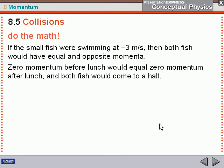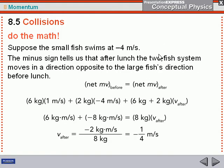If the small fish was moving at negative three meters per second, both fish would have the same momentum magnitude — negative three meters per second times two kilograms equals negative six kilogram meters per second — and they'd have equal and opposite momenta, so when they came together they would actually come to a halt; their final velocity would be zero. If the small fish is moving at negative four meters per second and we plug that in, the two fish actually end up going backwards — in the opposite direction of the large fish's original direction before they collide.